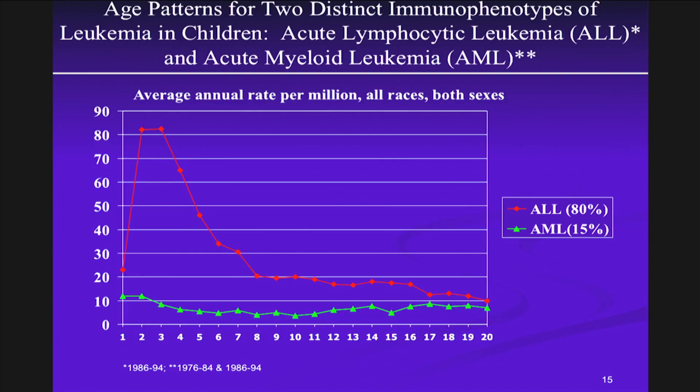We also note that the epidemiologic characteristics, as shown here, the age pattern of leukemias varies. Looking at this slide, we see the age distribution of the lymphoid leukemias in children — acute lymphatic leukemias compared to the myeloid leukemias.